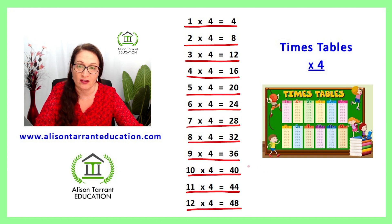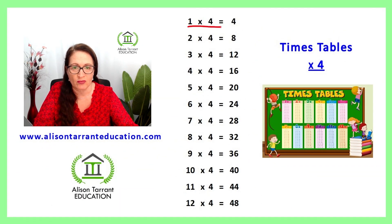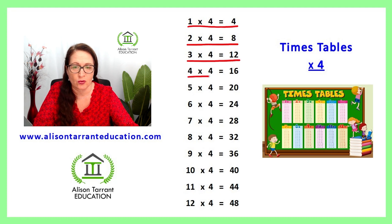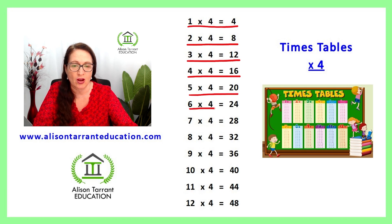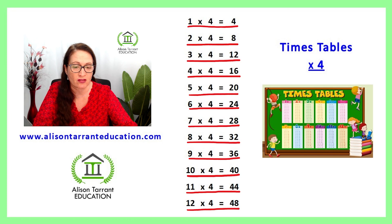Well done. Let's practice that again. 1 times 4 is 4, 2 times 4 is 8, 3 times 4 is 12, 4 times 4 is 16, 5 times 4 is 20, 6 times 4 is 24, 7 times 4 is 28, 8 times 4 is 32, 9 times 4 is 36, 10 times 4 is 40, 11 times 4 is 44, 12 times 4 is 48.